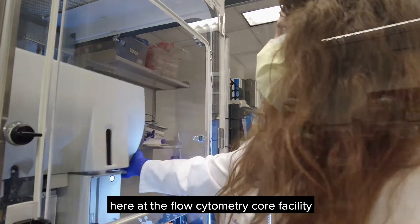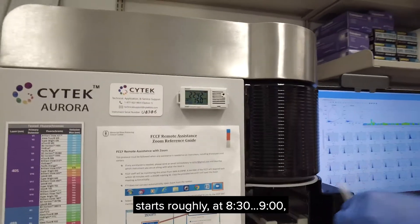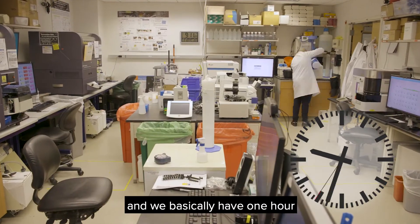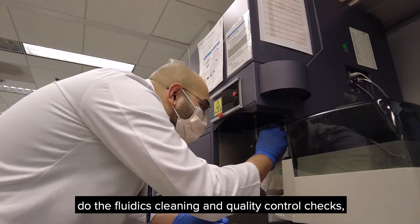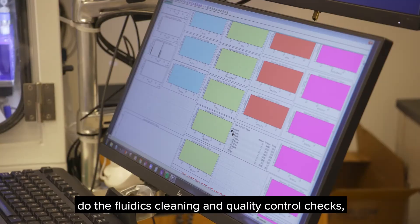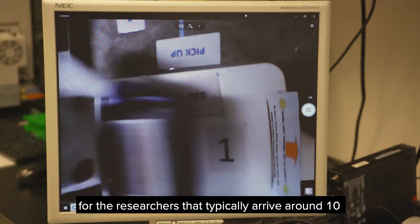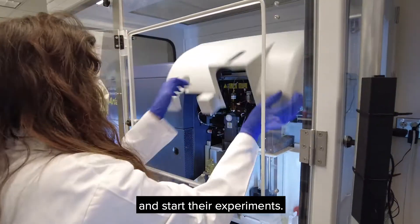The morning routine here at the flow cytometry core facility starts roughly at 8:30, 9 o'clock, and we basically have one hour to set up all the instruments, do the fluidics cleaning and quality control checks, so that we make sure that the instruments are performing well for the researchers that typically arrive around 10 and start their experiments.